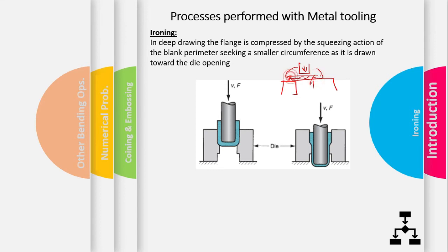Due to this compression, the blank becomes thicker as it moves inward. If the increased thickness of the stock is greater than the clearance between the punch and die, the ironing action takes place — the metal is squeezed between the punch and die. Sometimes ironing is performed as a separate step after the primary drawing operation to achieve a uniform wall thickness, giving the drawn part a longer form with more efficient material usage. Common examples include beverage cans and ammunition shells, which are very high production items involving ironing.